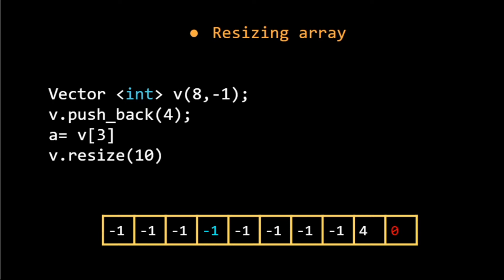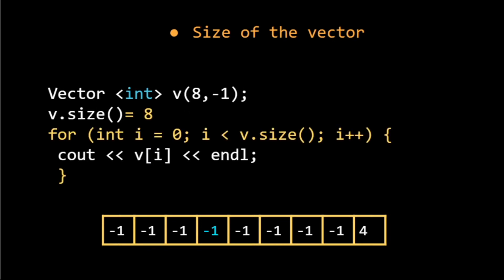Now if we want to delete an element from the end, we can use pop_back. When we write pop_back, it just deletes the last element in the vector. We can anytime get the size of the vector by writing v.size(). If we want to iterate over the array, we can easily use a loop from 0 to the size of the vector and it will work the same way it does in an array.